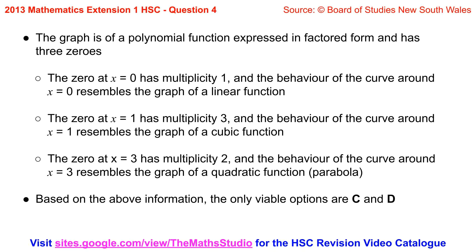The zero at x equals 3 has multiplicity 2 and the behavior of the curve around x equals 3 resembles the graph of a quadratic function or a parabola. Based on the above information the only viable options are C and D.